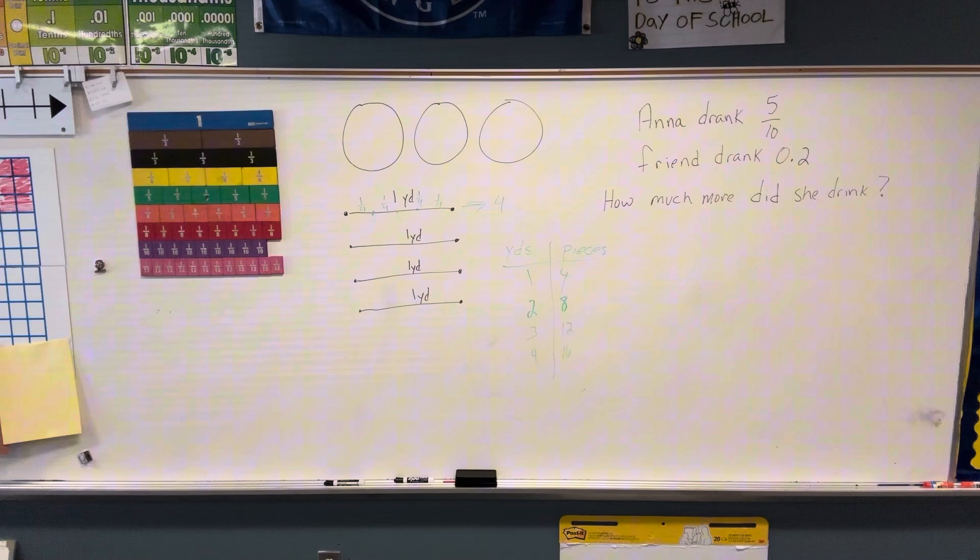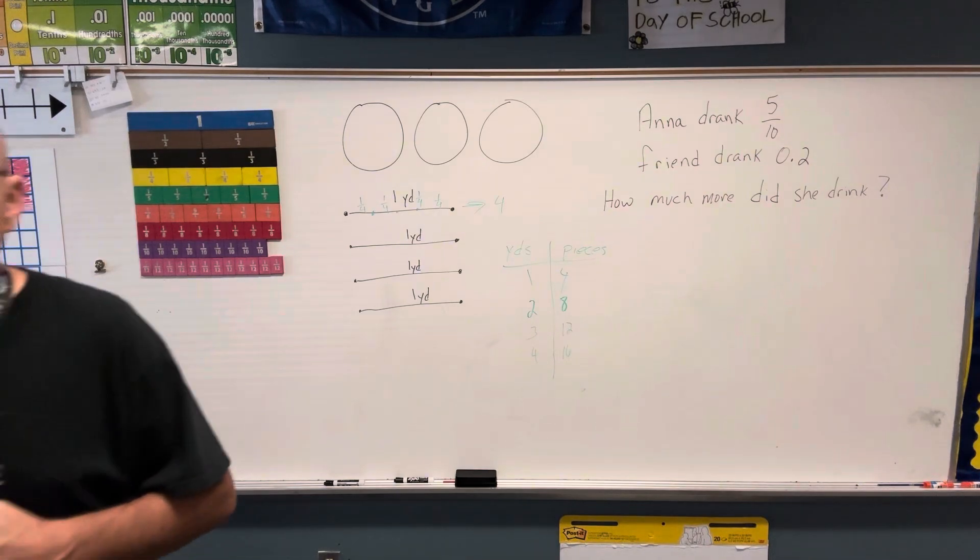He'll have sixteen pieces, not sixteen-fourths, because sixteen-fourths is four. Sixteen over four is four.